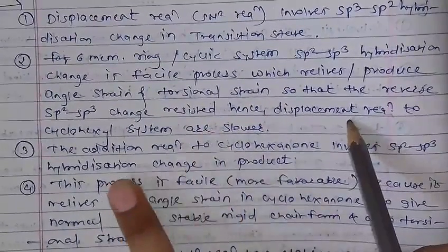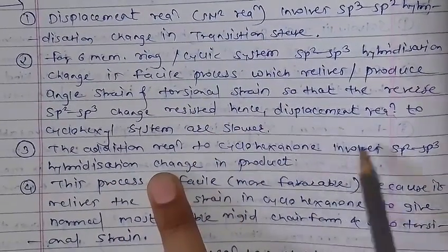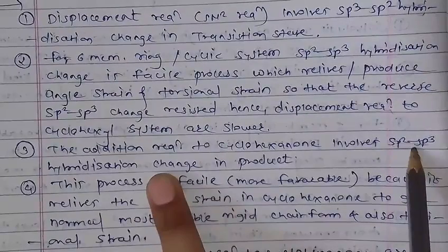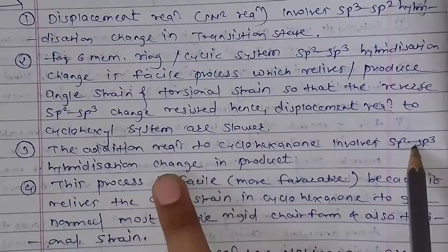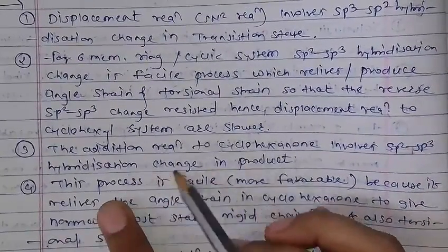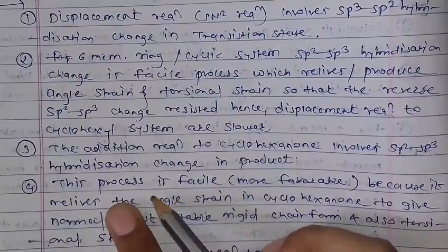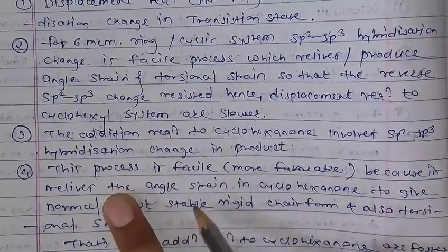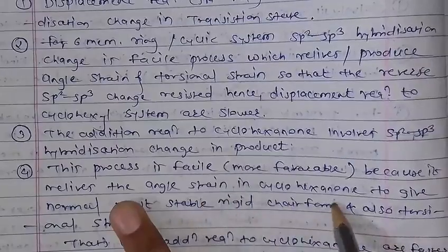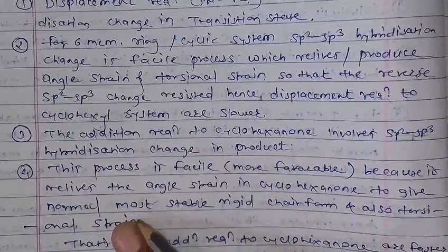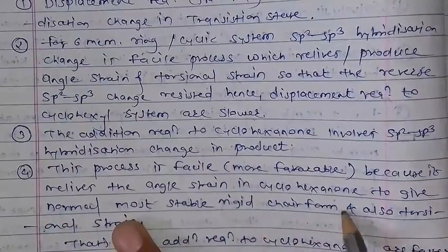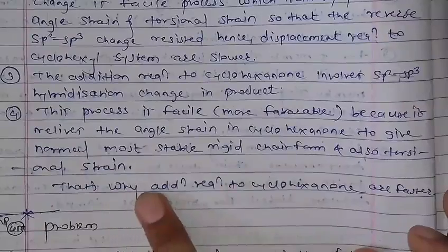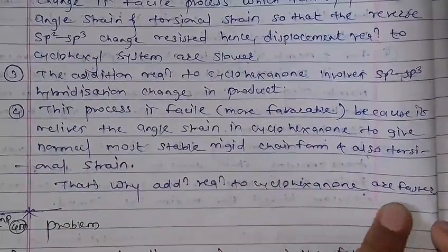The addition reaction of the cyclohexyl involves the sp3 change. The face-inversion process is more favorable because it relieves angle strain in the cyclohexyl to give the more stable chair conformation, also relieving torsional strain. That is why the addition reaction of the cyclohexyl system is faster.